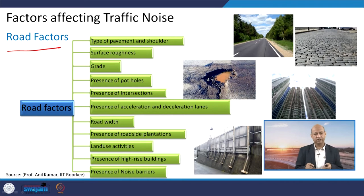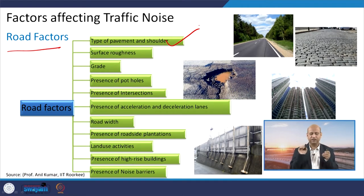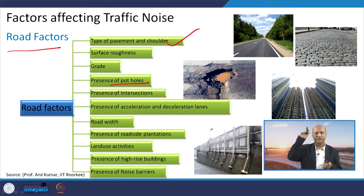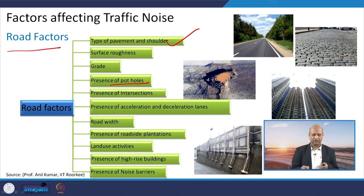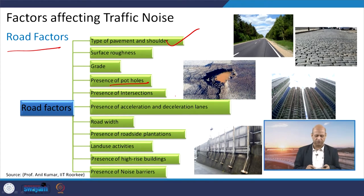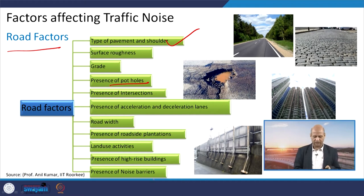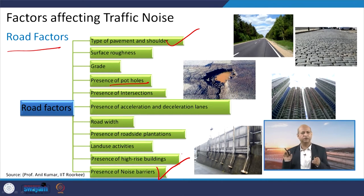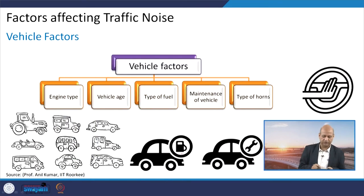Road factors include the condition of the road, type of pavement and shoulders, and surface roughness — all adding to noise levels. Road grade and potholes cause jumping, braking, and screeches that add to noise. At intersections, frequent changes in speed and gear contribute to noise. Road width determines whether congestion occurs. Noise barriers, when present, reduce noise for people on the other side — we will see how barriers reduce noise levels.